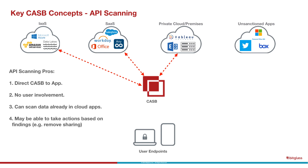APIs definitely have some advantages. They're direct CASB to app, so there's no user involvement. You don't have to worry about the endpoint, the client, or the user changing any behaviors. Another nice advantage is that APIs can scan data that's already in cloud apps. So if someone has already deployed Office 365 or Salesforce months or years ago and is now looking at a CASB solution, this gives them the opportunity to go back and analyze data that's already in those cloud apps.